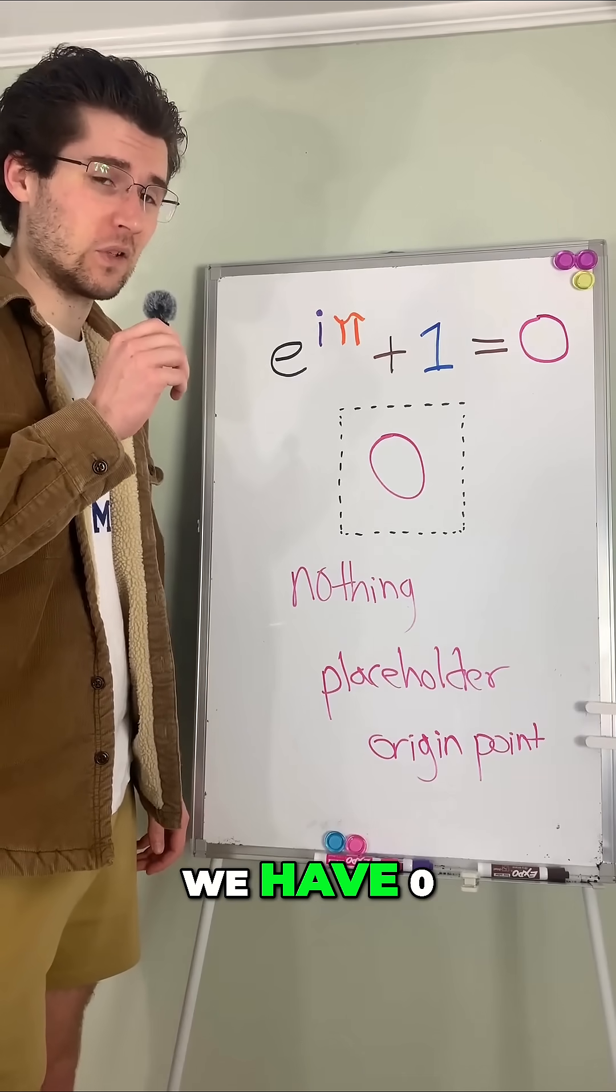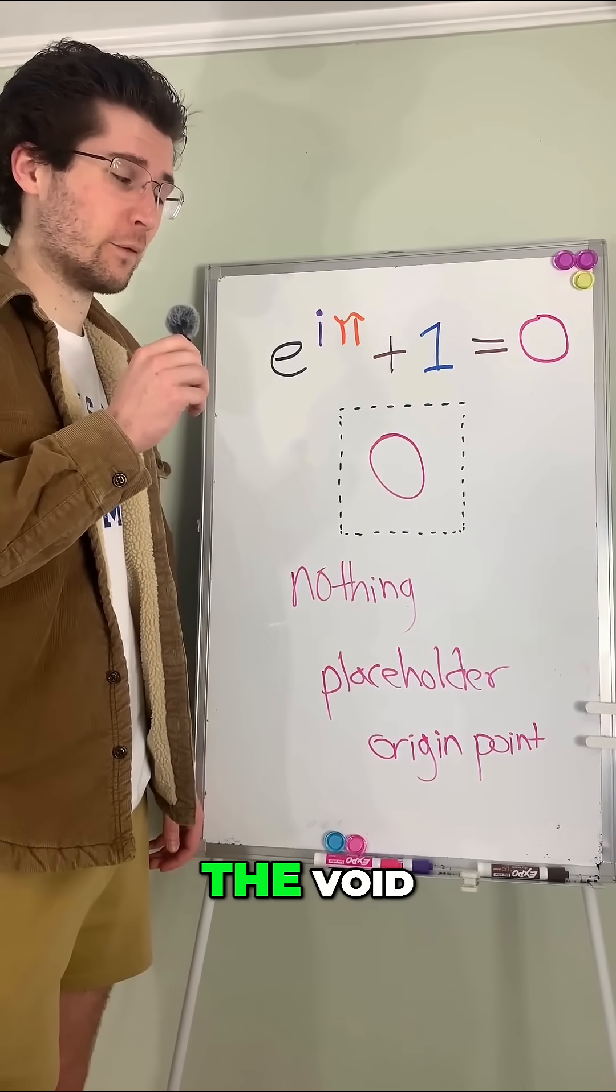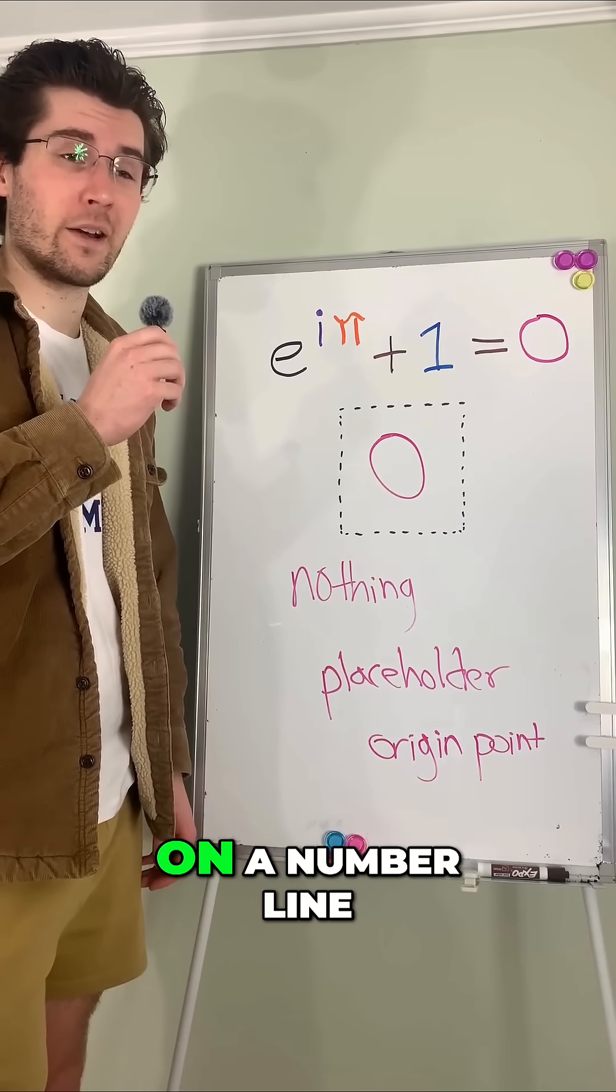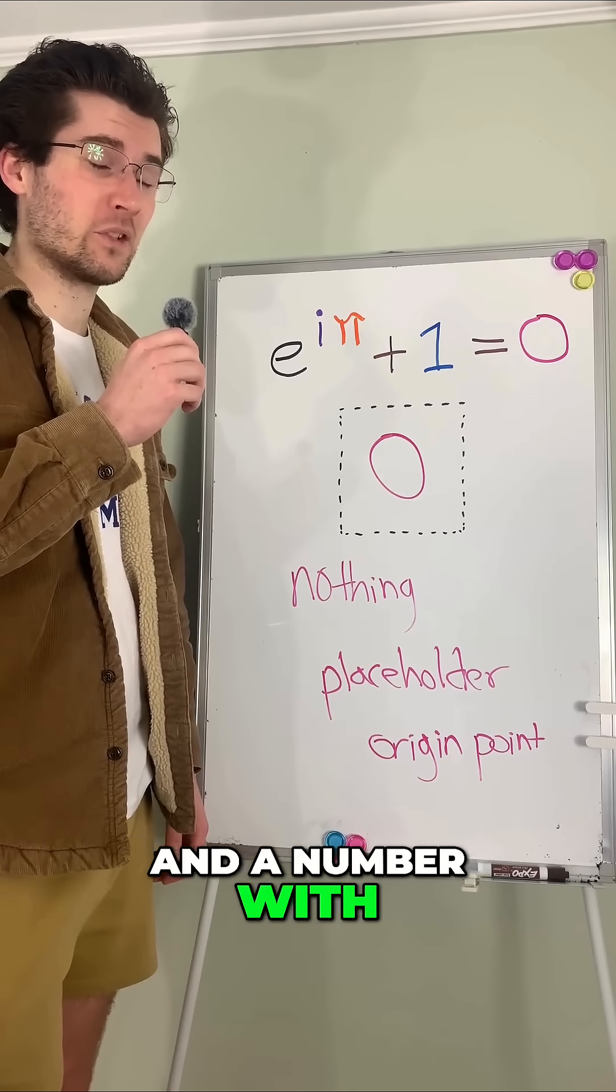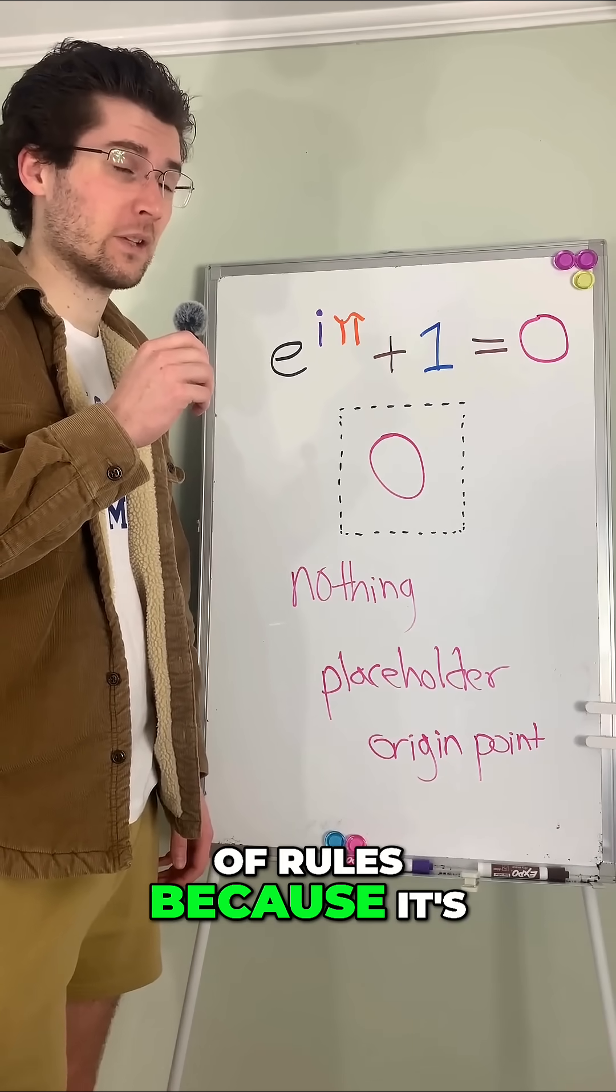Last but not least, we have 0. 0 is nothing, a placeholder and the origin point on a number line, and a number with its own special set of rules, because it's so bizarre.